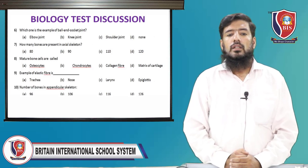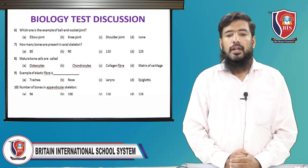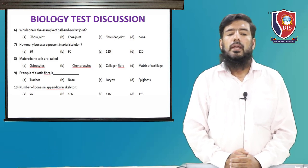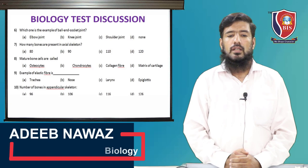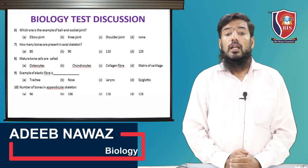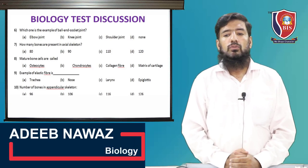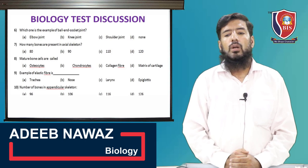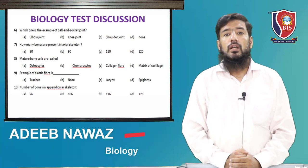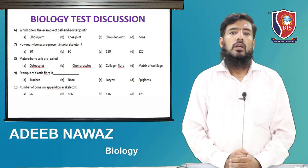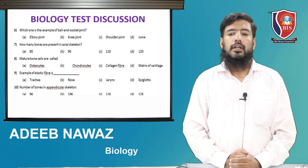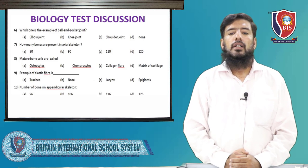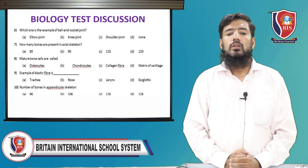MCQ 9: example of elastic fiber — what is the proper example of elastic fiber? The correct option is epiglottis — option D. Epiglottis is the correct answer.